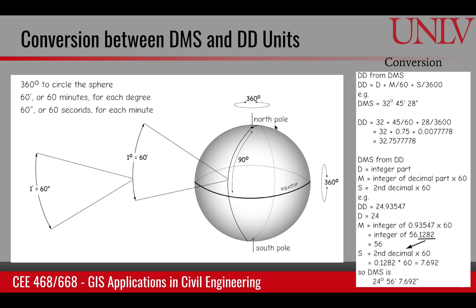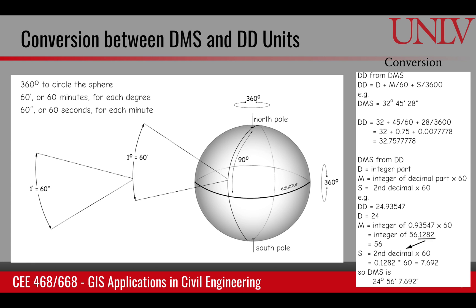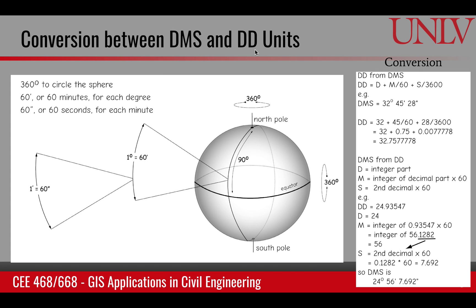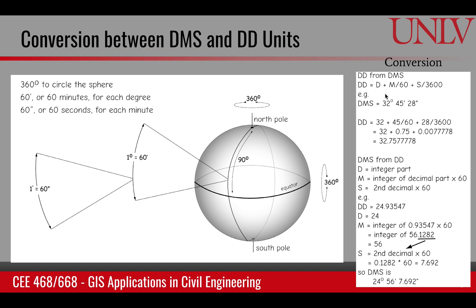In the degree, minute, second system, a circle is divided into 360 degrees. Each degree has 60 minutes, and each minute has 60 seconds — similar to how our clocks work with 60 seconds per minute and 60 minutes per hour. We can convert DMS into decimal degrees, where an angle is represented as a decimal value rather than degrees, minutes, and seconds. Review the example to understand how to convert between these two systems.